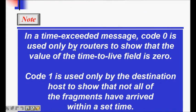Then we have the parameter problem. Parameter problem message can be created by a router or the destination host. It tells that some kind of parameters are not set properly. So type is 12, and code is zero or one.